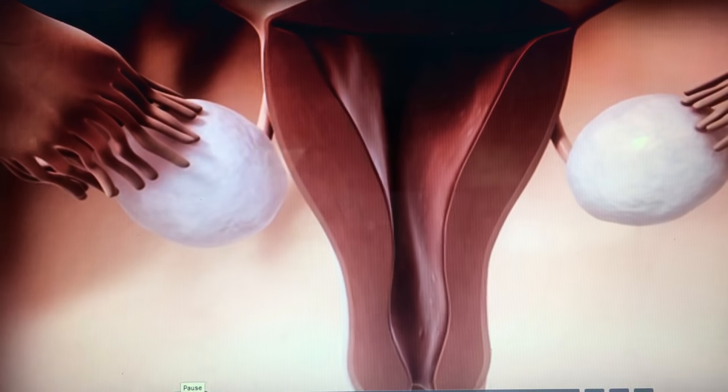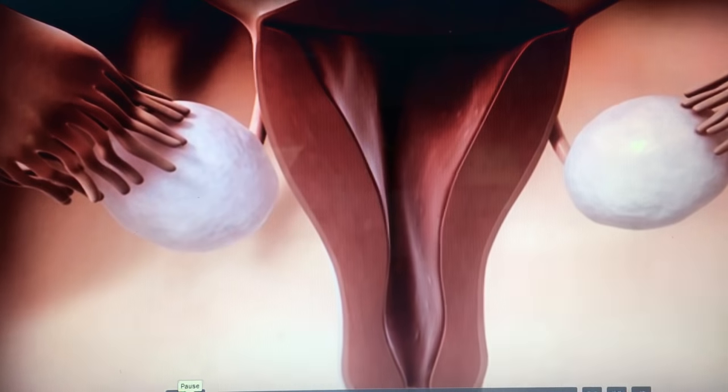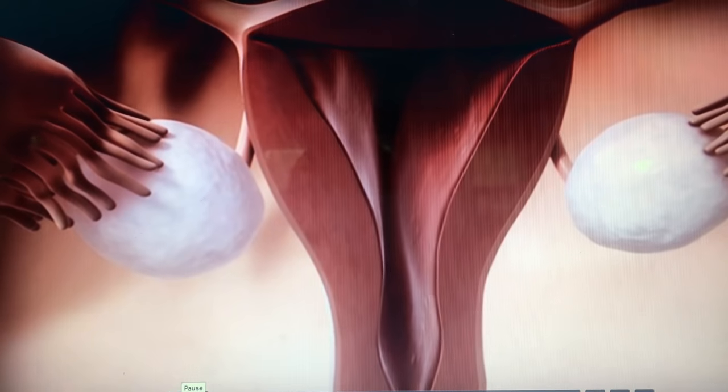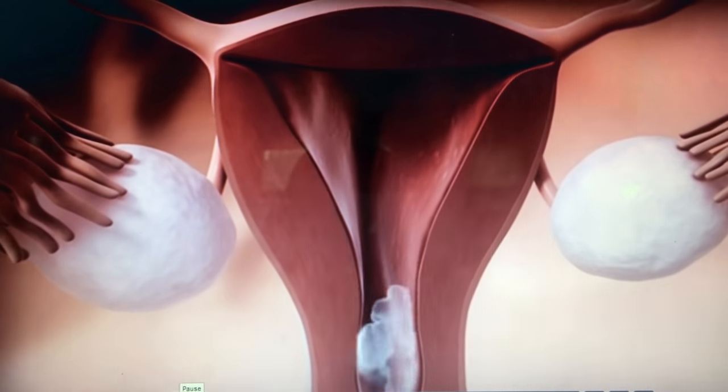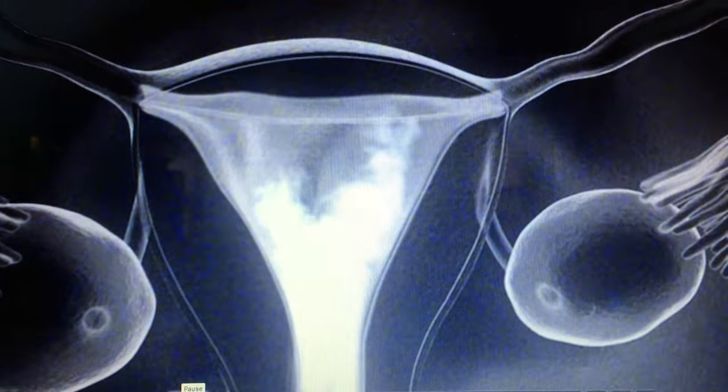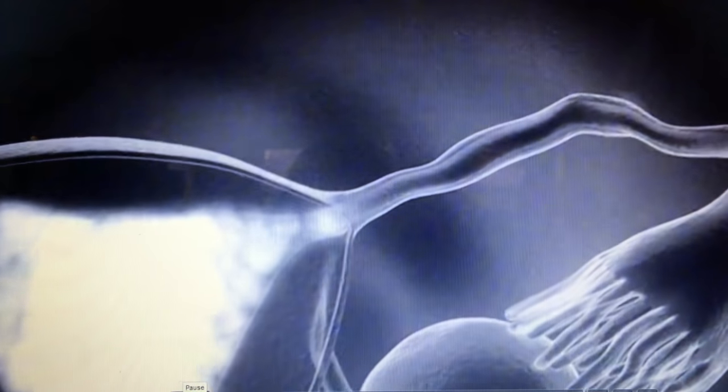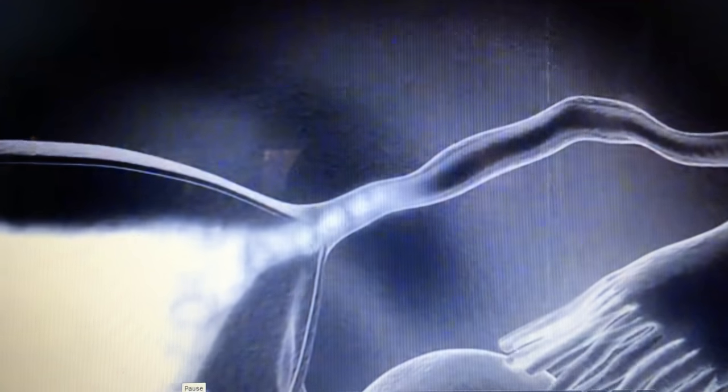In HSG, a thin tube is threaded through the vagina and cervix. A substance known as contrast material is injected into the uterus. A series of X-rays, or fluoroscopy, follows the dye which appears white on X-ray, as it moves into the uterus and then into the tubes.